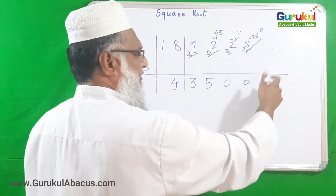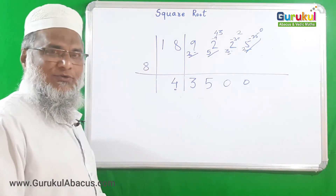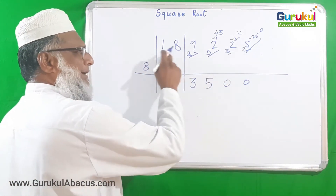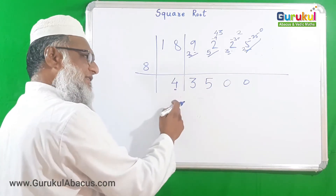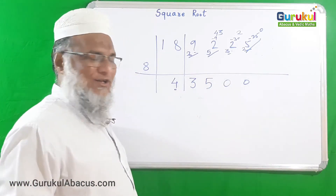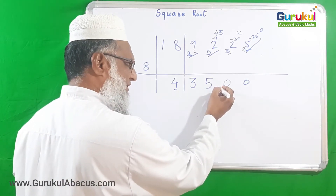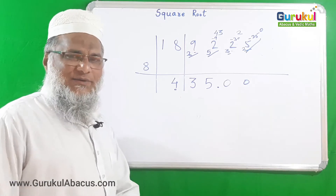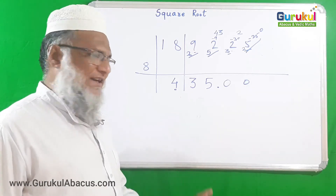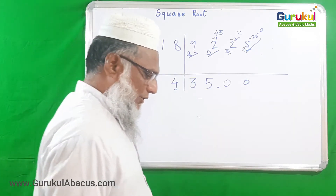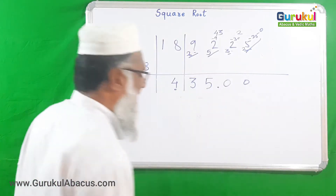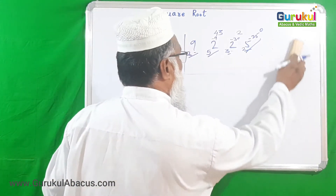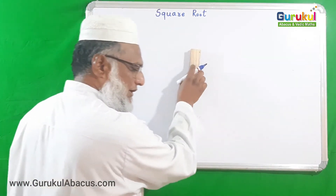Taking zeros further only produces zeros. Since we had three pairs, our answer has three digits. Placing the decimal point: the answer is 435. That is it. I think you have got the method, but we will solve one more different example to make the concept even more clear.